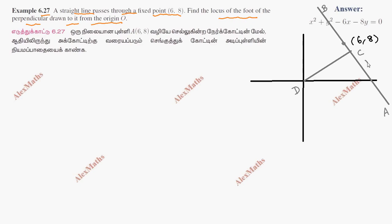The line has slope M. The line is different for different cases. Suppose we have another line — the line should pass through (6, 8). They will trace different paths as the line moves through the fixed point.